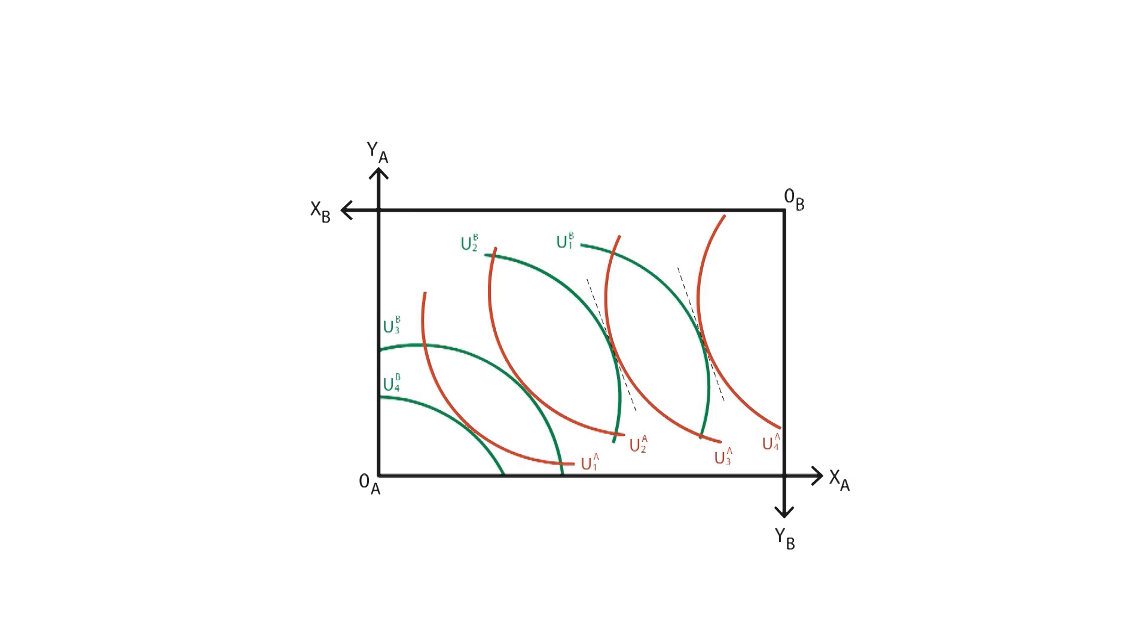When indifference curves are tangent to each other, their marginal rate of substitution at the tangency point are equal to each other. By connecting all points of tangency between the indifference curves of both individuals, the contract curve is constructed and represents all Pareto efficient allocations.